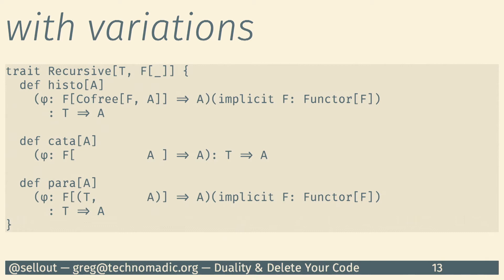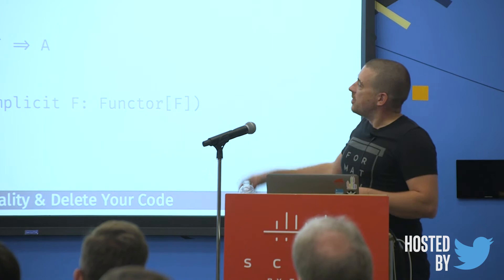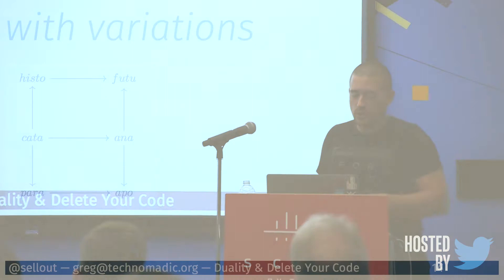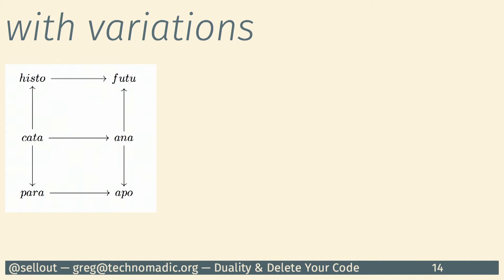Then people start wanting more. Someone says: I have this thing that's kind of like a catamorphism, but I need to look at the original tree structure as I go through — maintain it in some way. There's a variation called a paramorphism that does that. Or someone says: I need to see some of the results I previously calculated along the way, to use them again in later computations. That's the histomorphism, where 'histo' is short for history — you get the history of all things calculated along the way. So these variations mean your library is now getting a little bigger and feels justified as its own library.